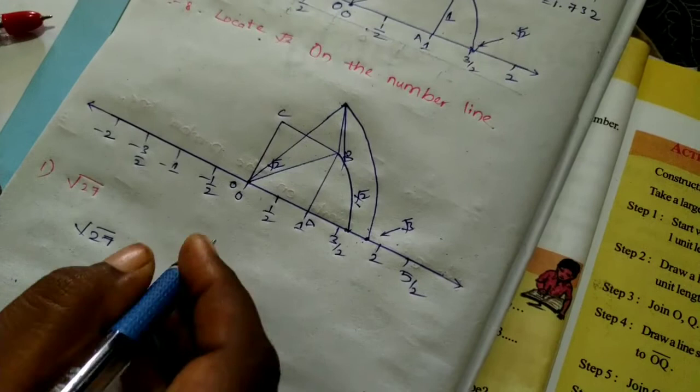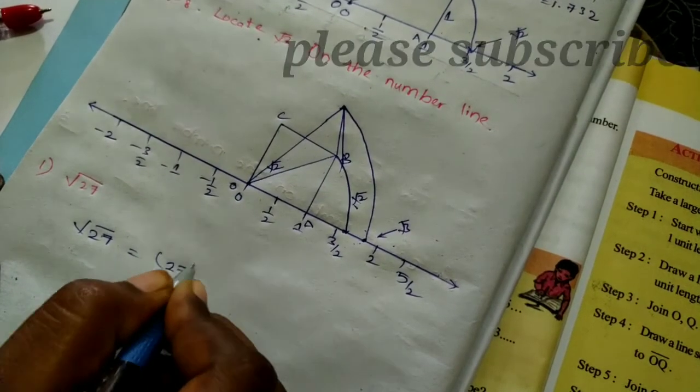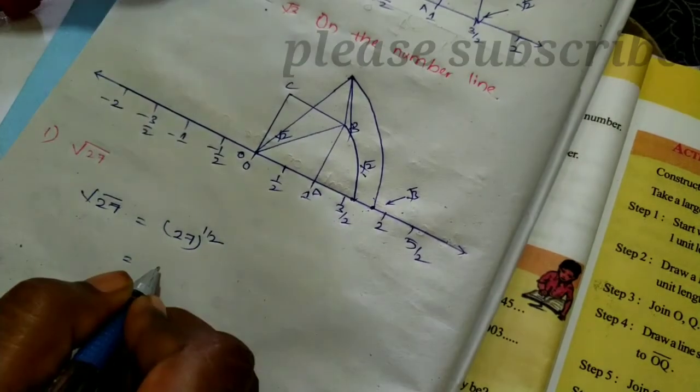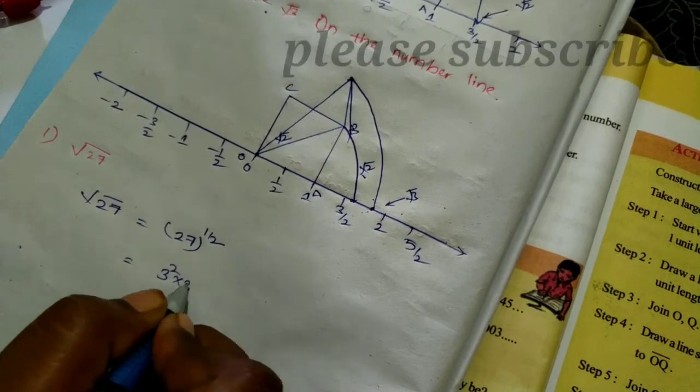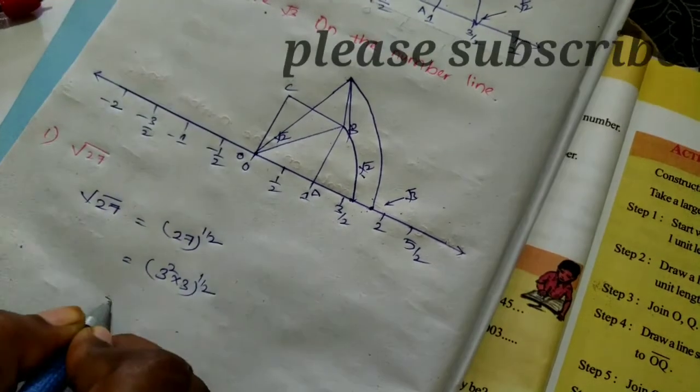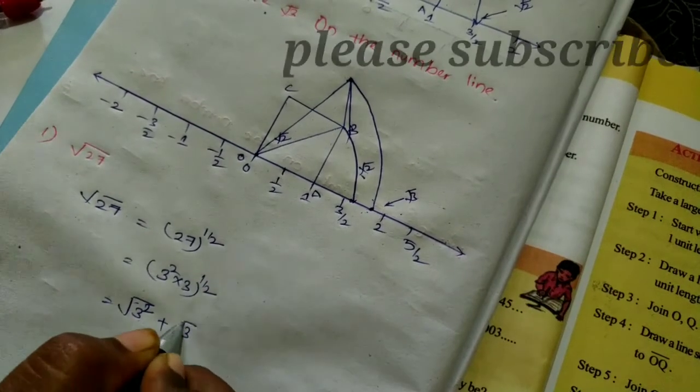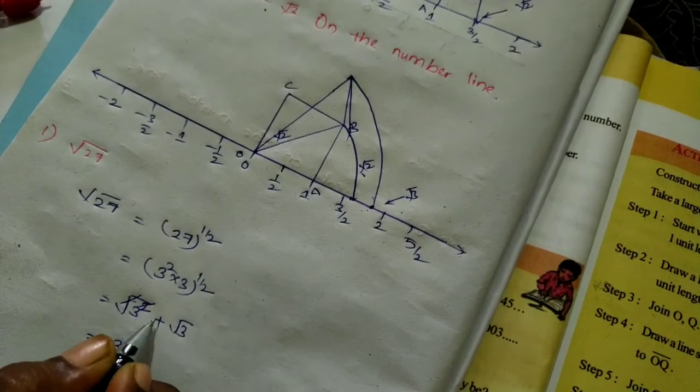The root 27 is equal to root 27. So let's write the cycle number: 3 squared is equal to root. We have 3 times root 3. Now this value is 3 root 3.